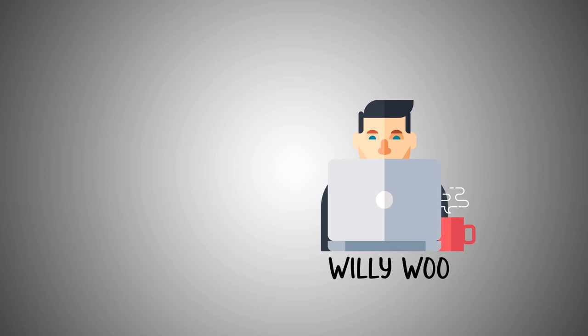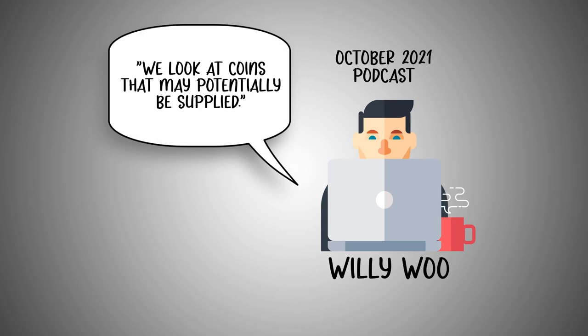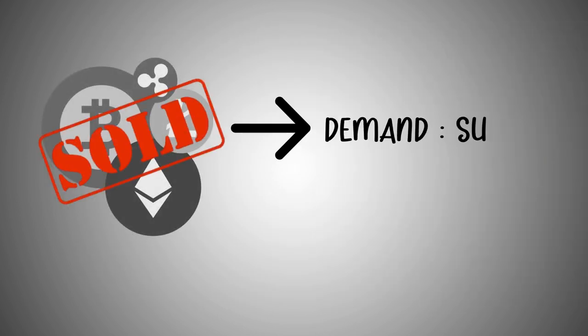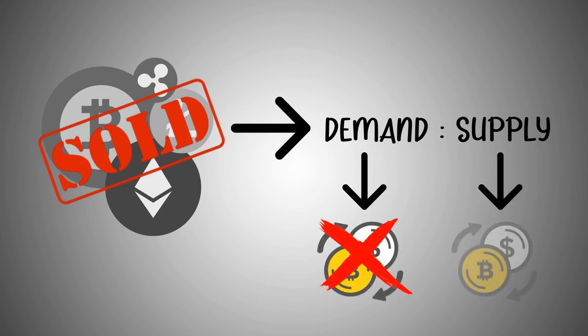As Willy Woo mentioned in an October 2021 podcast: 'We look at coins that may potentially be supplied — these are the coins that aren't locked up in long-term holding situations. They look likely to be sold, so you can run the ratio between demand and supply. Those guys that aren't selling are on the demand side, and the guys that might be selling are on the supply side. And you get a whole family of supply shock metrics.'